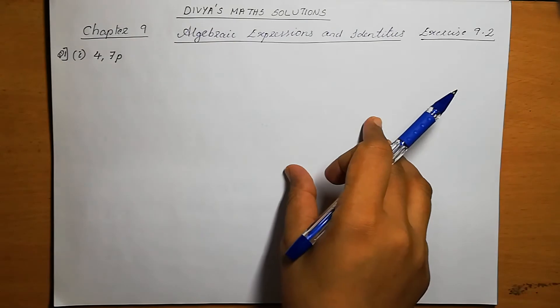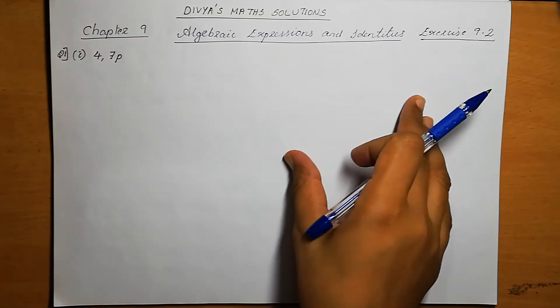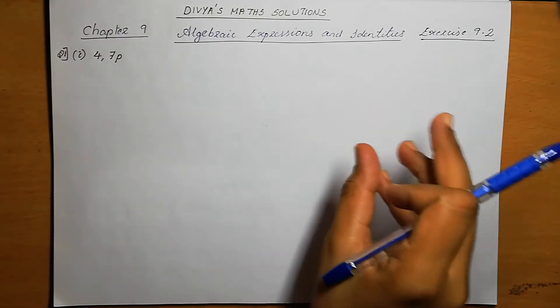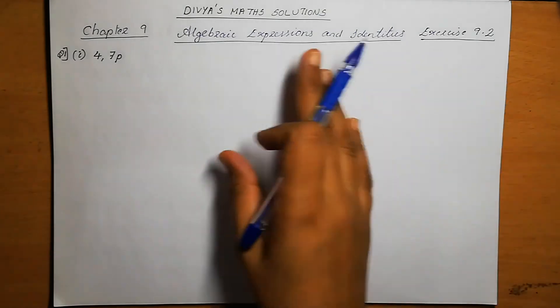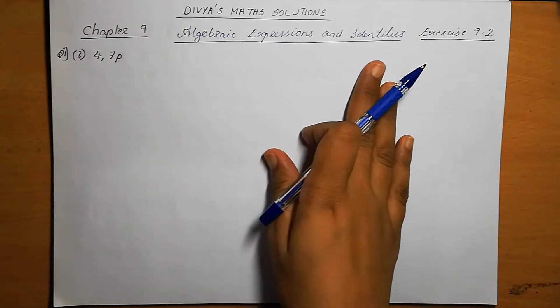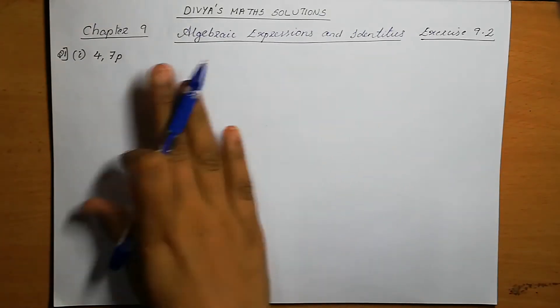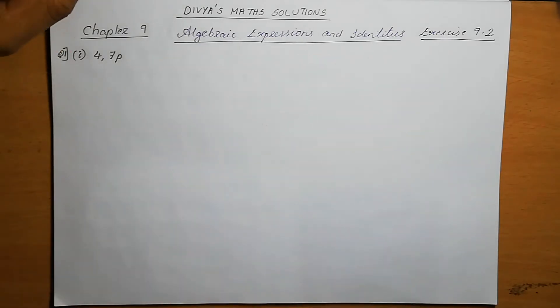Here we are going to do the product of algebraic expressions. If we are taking the product, it means each item we need to multiply. So multiplication means each item we need to multiply. Directly we can go for the exercise — that will be easy.